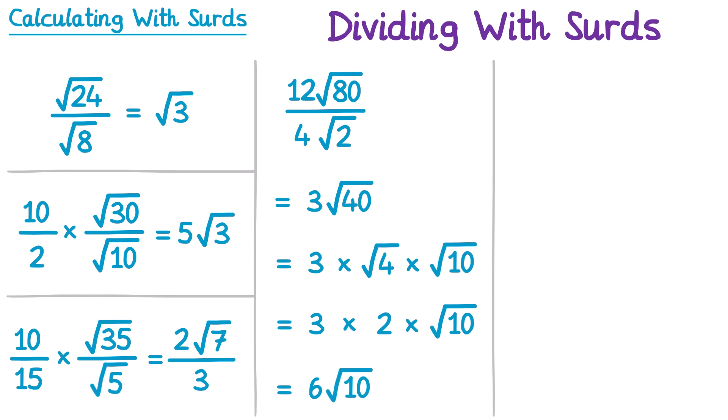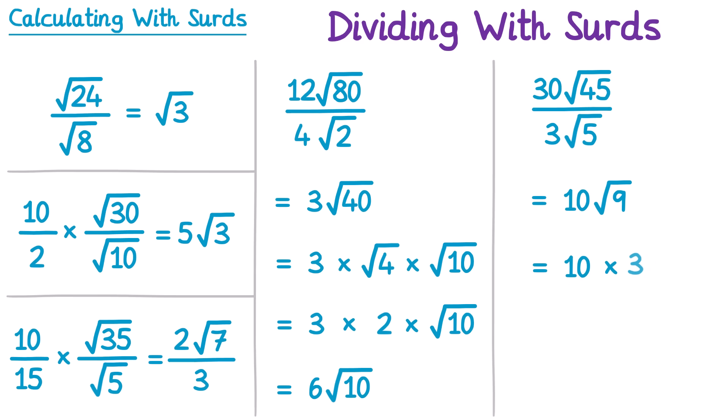Let's try one more: 30 root 45 divided by 3 root 5. Thirty divided by 3 gives 10, and the square root of 45 divided by the square root of 5 gives the square root of 9. Since the square root of 9 is just 3, this is 10 times 3, which is 30.